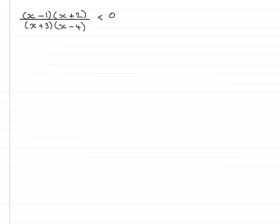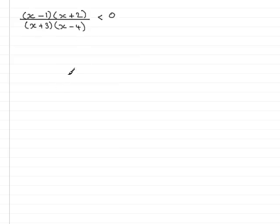There are many kinds of fractional inequalities and various ways of solving them. In this particular example, I'm going to show you one way of solving a fractional inequality where you've got a quadratic expression on the top and a quadratic expression on the bottom, and both are in their factorized state. One way is to work out the critical values of the top and of the bottom.